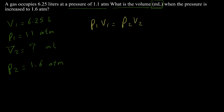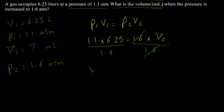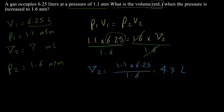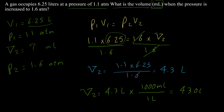So: p1·v1 = p2·v2 → 1.1 × 6.25 = 1.6 × v2. Dividing both sides by 1.6, v2 = (1.1 × 6.25) / 1.6 = 4.3 liters. Since v1 was in liters, v2 is 4.3 liters. Converting to milliliters by multiplying by 1000 gives 4300 milliliters.